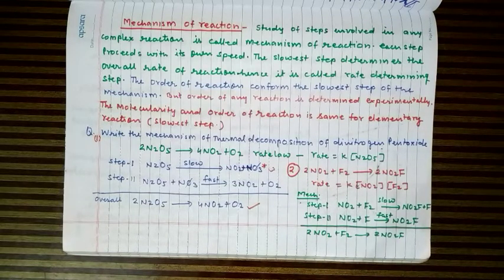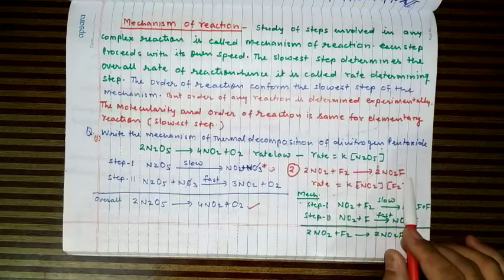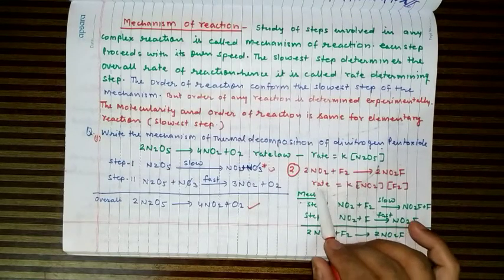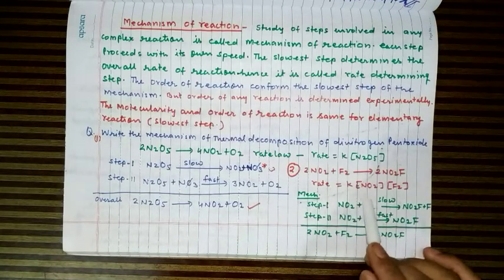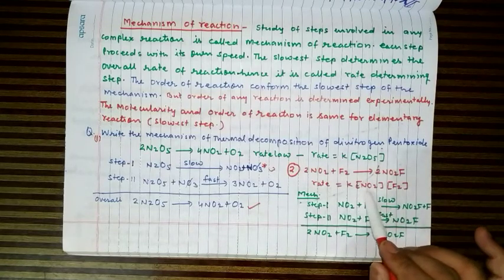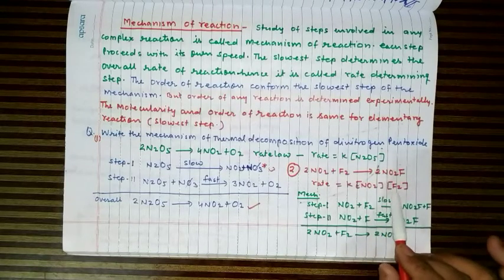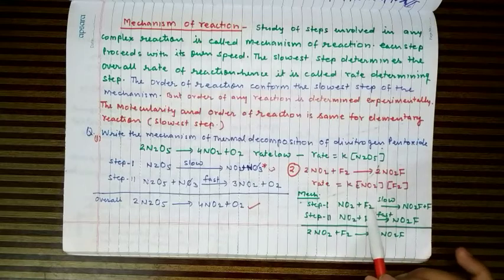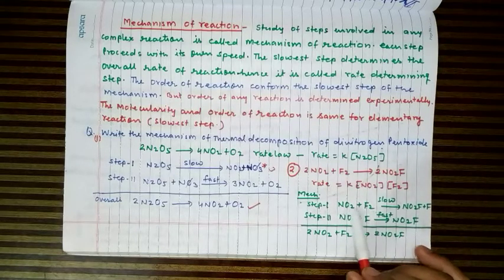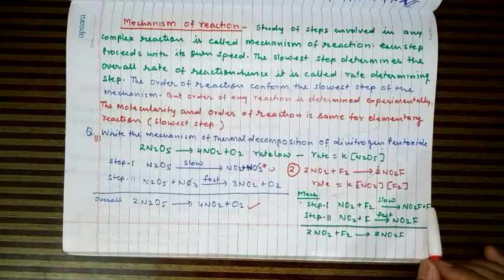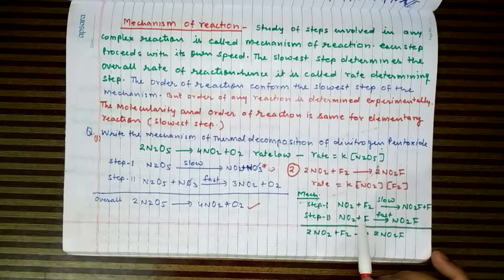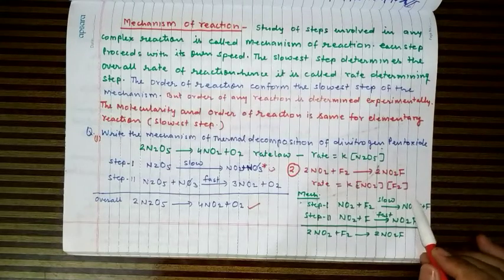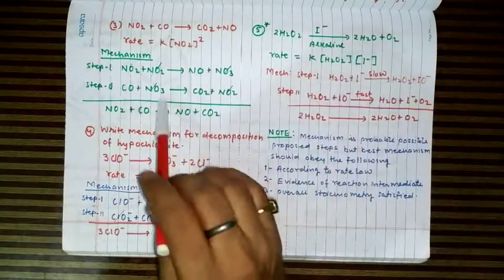For the reaction 2NO2 + F2 → 2NO2F, if we look at the rate law expression, one molecule of NO2 and one molecule of F2 are involved in the rate-determining step. Since there are two NO2 molecules overall, the reaction occurs in steps. The first step (slow): NO2 + F2 → NO2F + F (atomic fluorine). Atomic fluorine is a highly reactive intermediate. The next step is fast: F reacts with NO2 to give the final product NO2F.